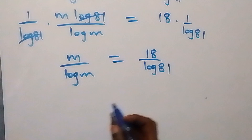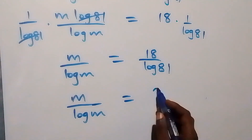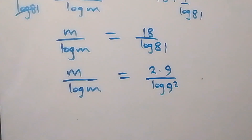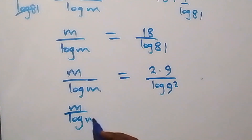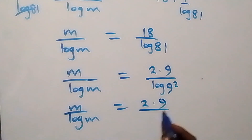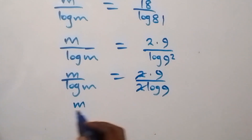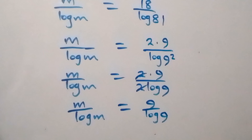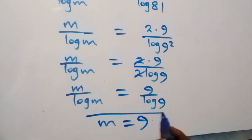Since we can write 18 as 9 times 2 and 81 as 9 squared, this becomes m over log m equals 2 times 9 over log of 9 squared. Applying the power law of logarithms, the 2 comes out front, and we get m over log m equals 9 over log 9. Comparing both sides, we conclude that m equals 9, which is the same result as the first method.